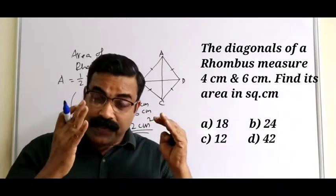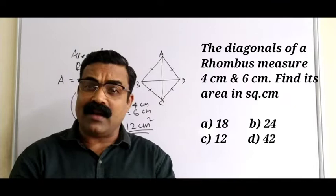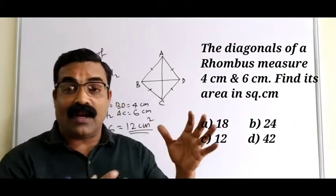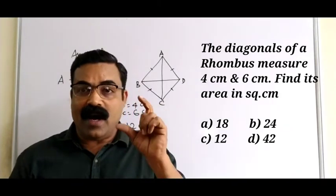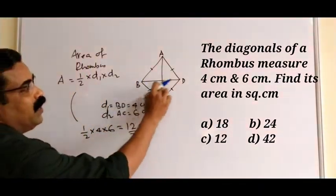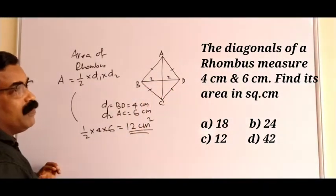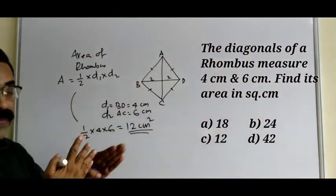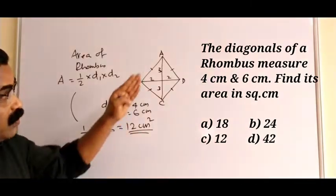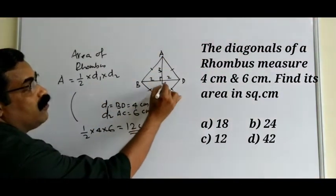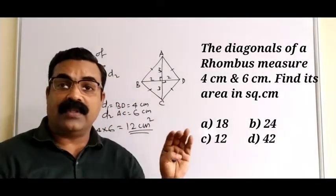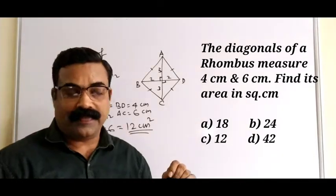These types of questions are repeatedly asked in your IBPS exam. Understand the properties of a rhombus: the diagonals bisect each other equally, so BD of 4 cm gives 2 cm on each side and AC of 6 cm gives 3 cm on each side. The angle at the intersection is always 90 degrees, forming a right-angled triangle. So you can easily find the area using the formula.